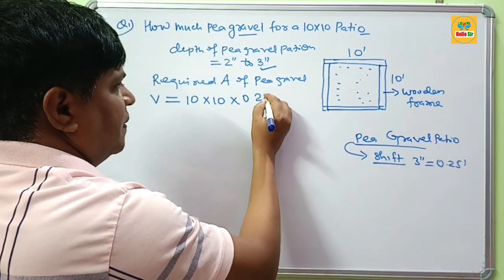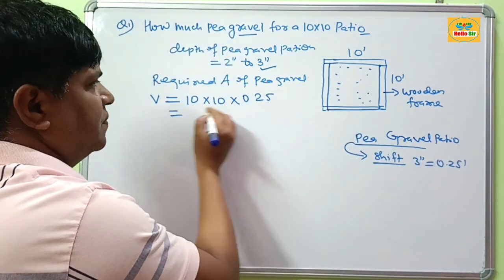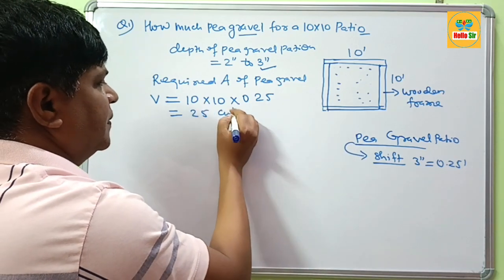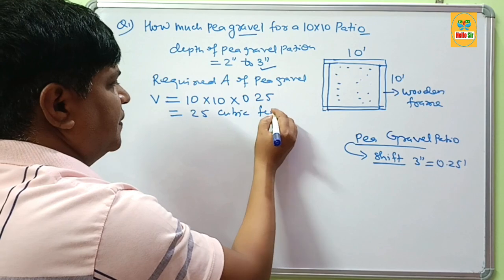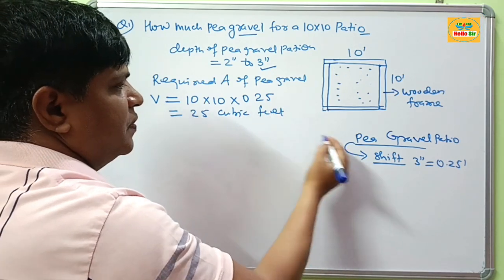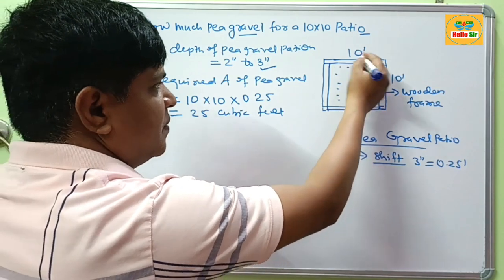You multiply all 3 dimensions of patio. This will count about 25 cubic feet. This means you need about 25 cubic feet of big gravel for this 10x10 patio.